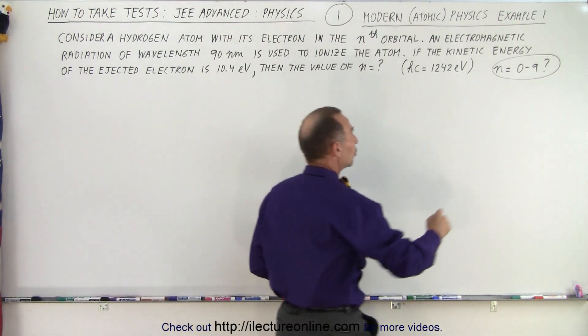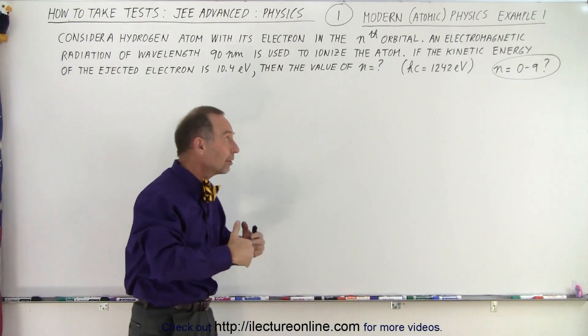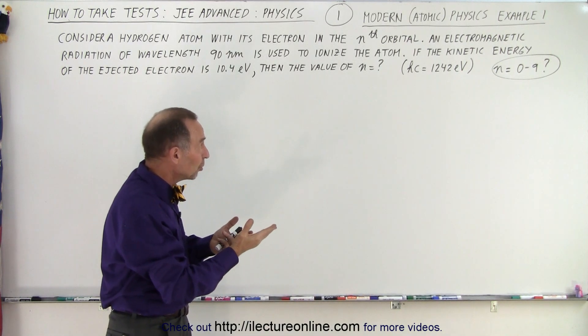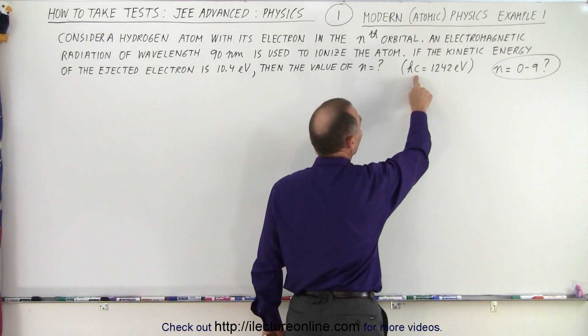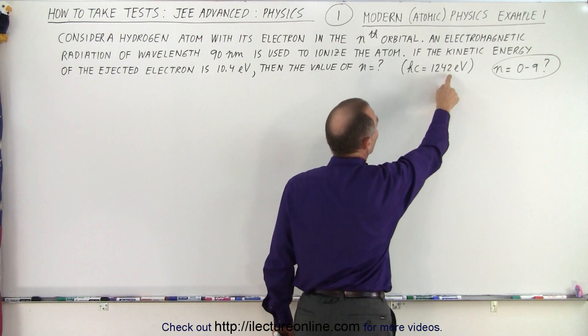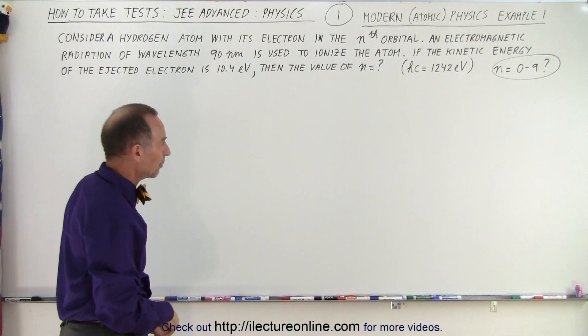And we're looking for an integer between 0 and 9. That's the type of problem it is. These problems require the value of n to be an integer between 0 and 9. And they give us that Planck's constant times the speed of light is equal to 1242 electron volts. So you don't need a calculator. No calculators allowed.